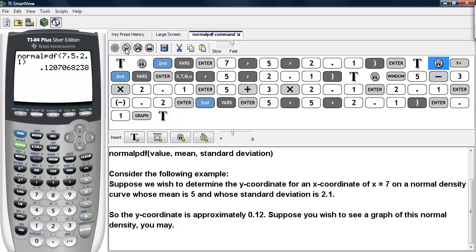Suppose you wish to see a graph of this normal density as well. You may do this by starting off by selecting y equals. Again, going under second and vars, and selecting this first option. We type in x, and then the mean, and then the standard deviation.